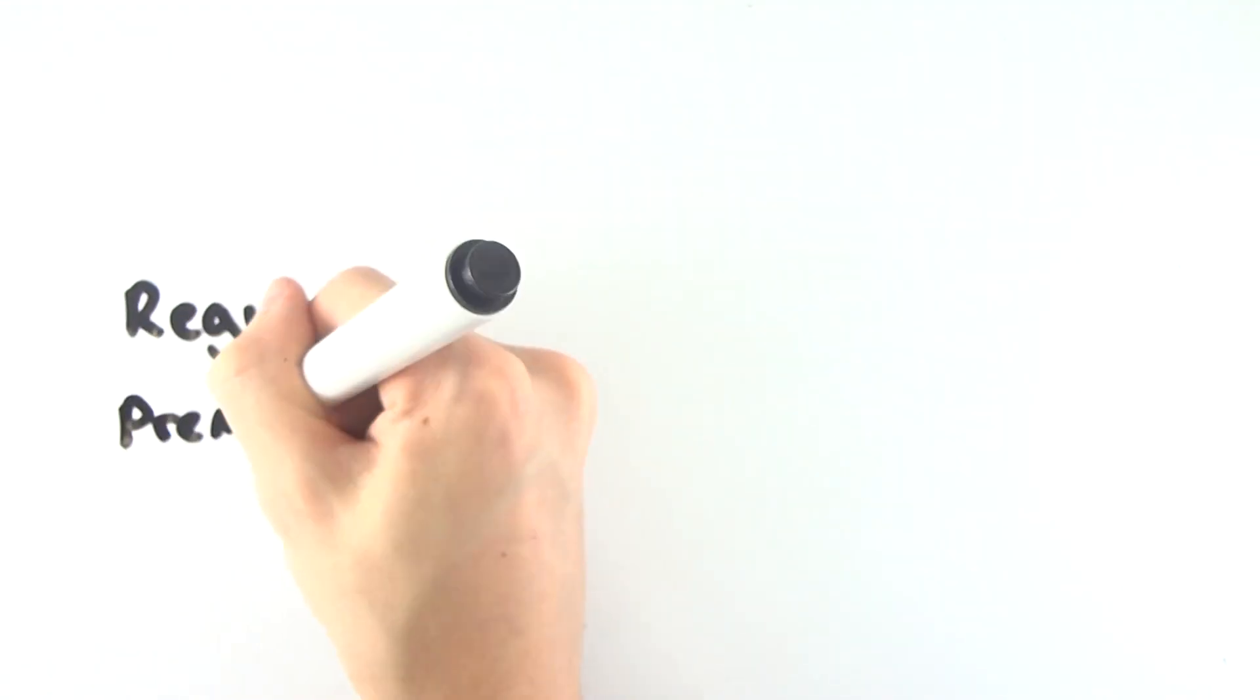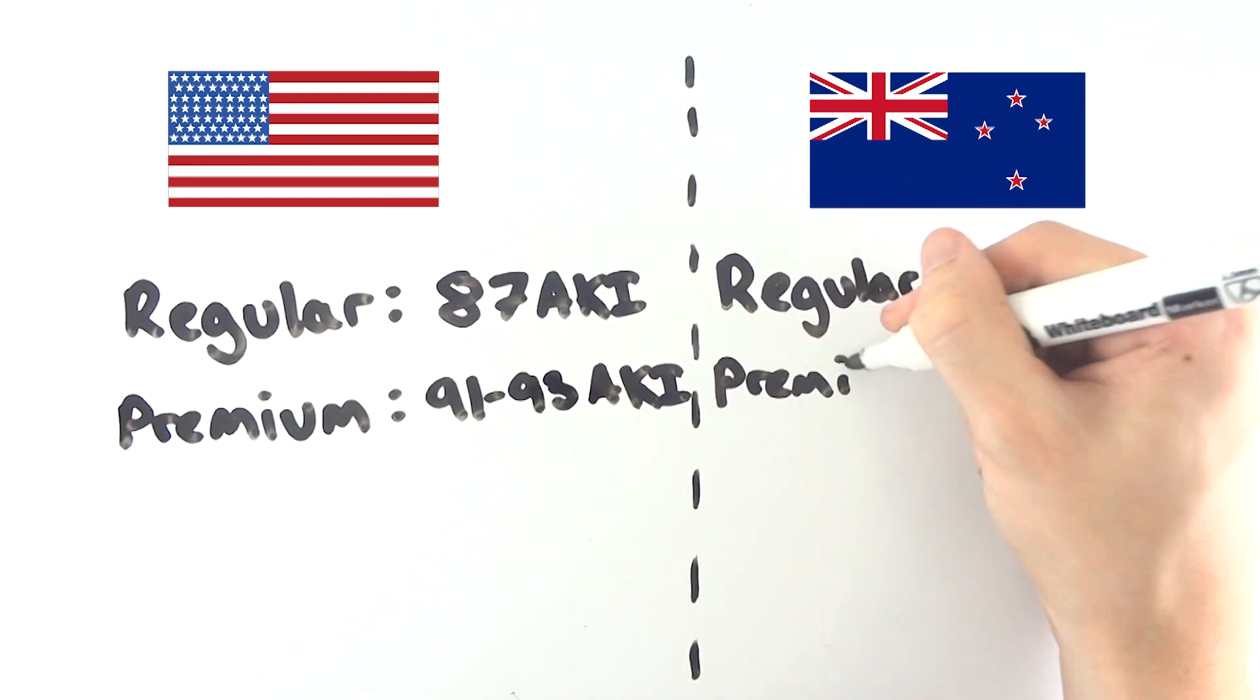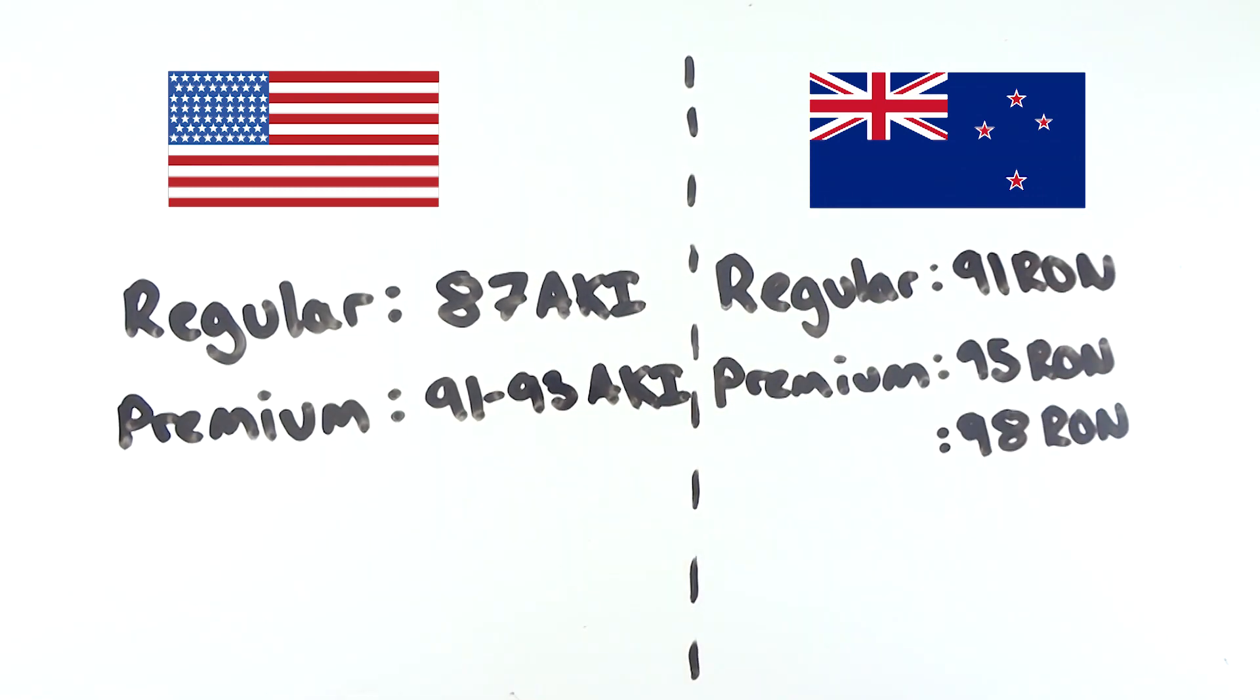Firstly, to avoid confusion in the comments, gas around the world is usually sold in quite different octane ratings. In the US, regular is 87 AKI, and premium is usually 91 to 93 AKI.